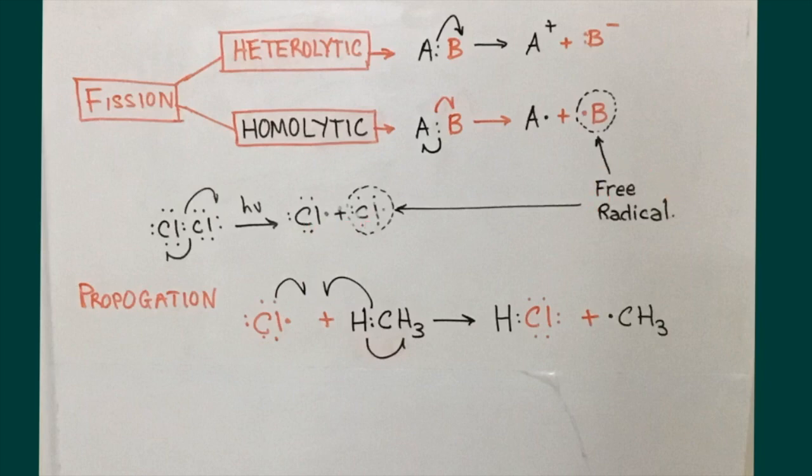And then we can move to the propagation step, again, to include the fishhook arrow to symbolize the movement of a single electron here and a single electron here, to create this covalent bond between hydrogen and chlorine, and then a single electron moving over to the CH3, another fishhook arrow.